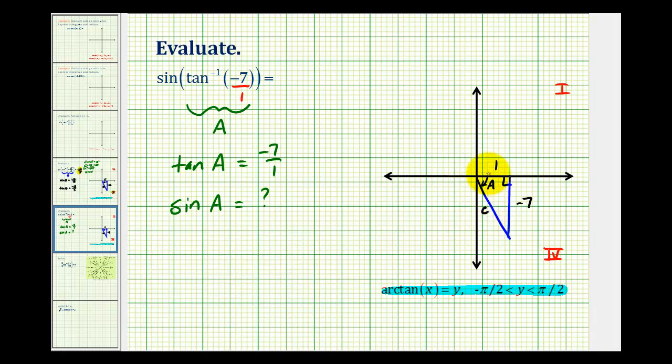So if we call this C, we know that C squared must equal A squared plus B squared, where A and B would be the length of the two legs. So C squared is going to be equal to, let's let A equal negative seven and B equal one.